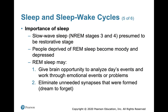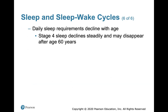People deprived of REM sleep become moody and depressed. REM sleep may give the brain the opportunity to analyze the day's events, work through emotional problems, and eliminate unneeded synapses. Daily sleep requirements decline with age — stage four sleep declines steadily and may disappear after age 60. Narcolepsy is an abrupt lapse into sleep from an awake state. Insomnia is the chronic inability to obtain needed sleep, possibly caused by depression, anxiety, overuse of caffeine, or computer and cell phone use too close to bedtime.